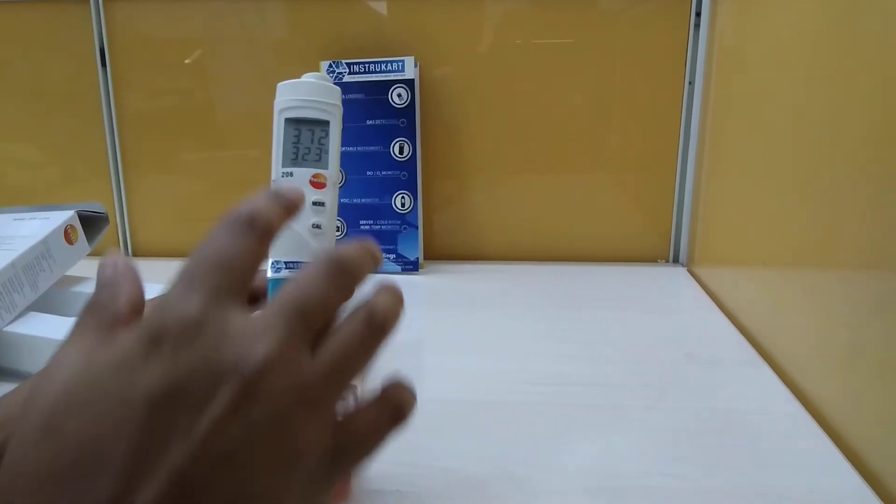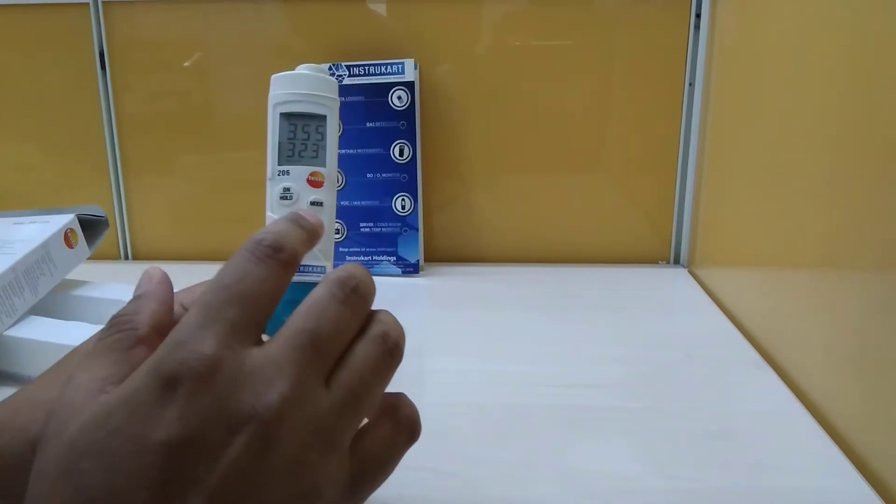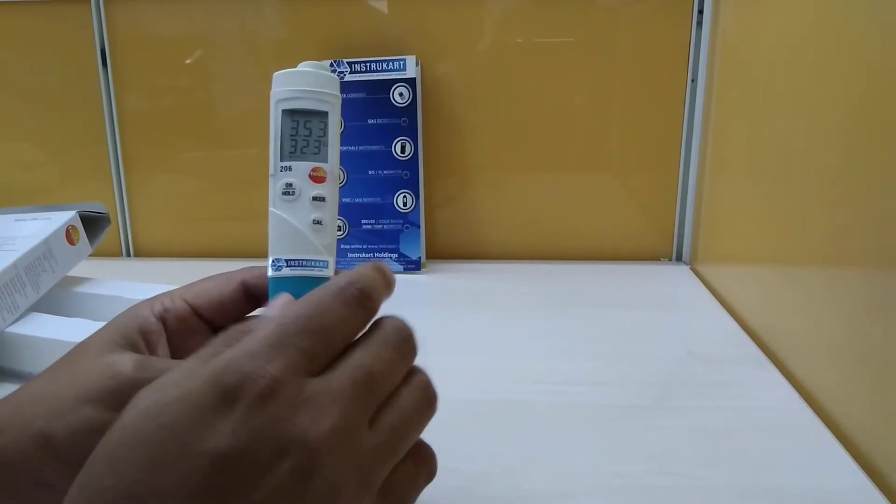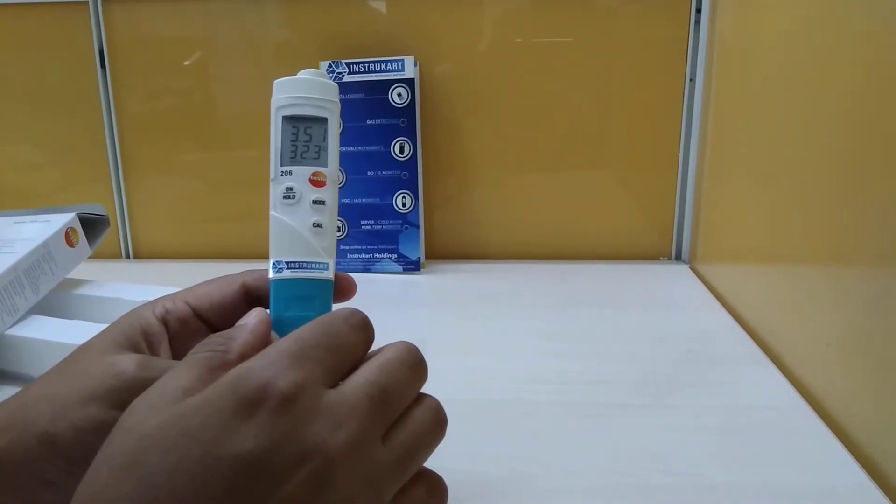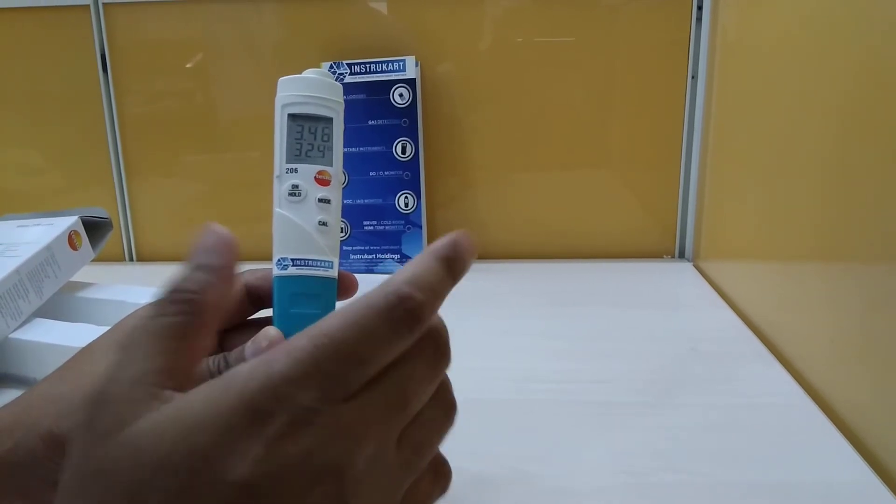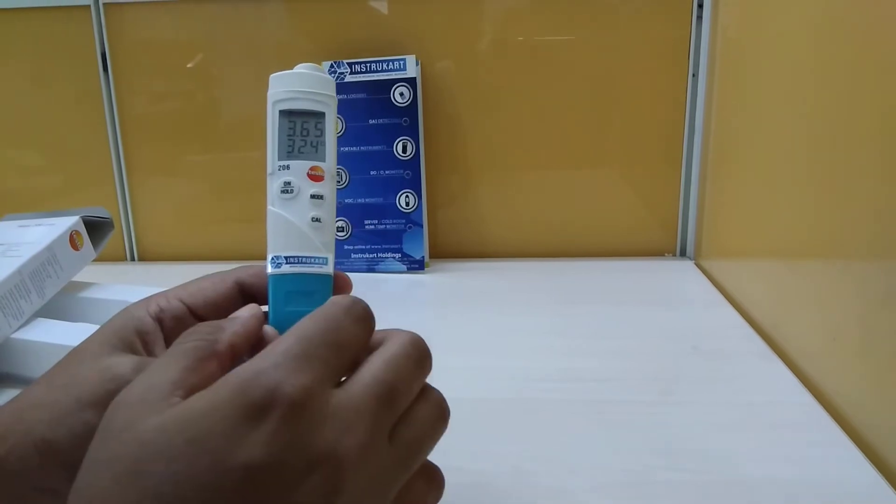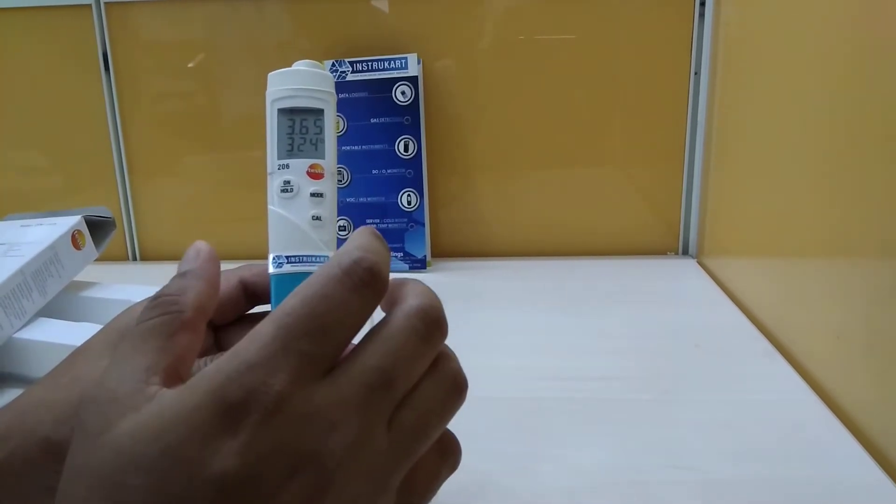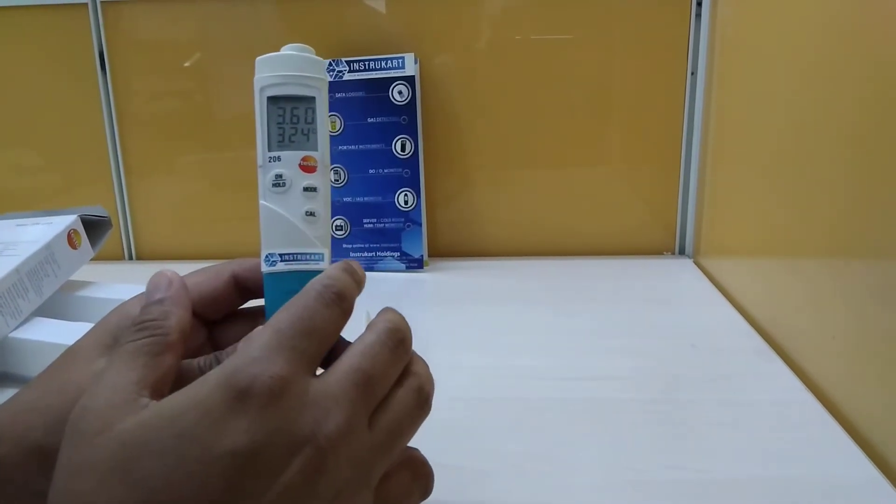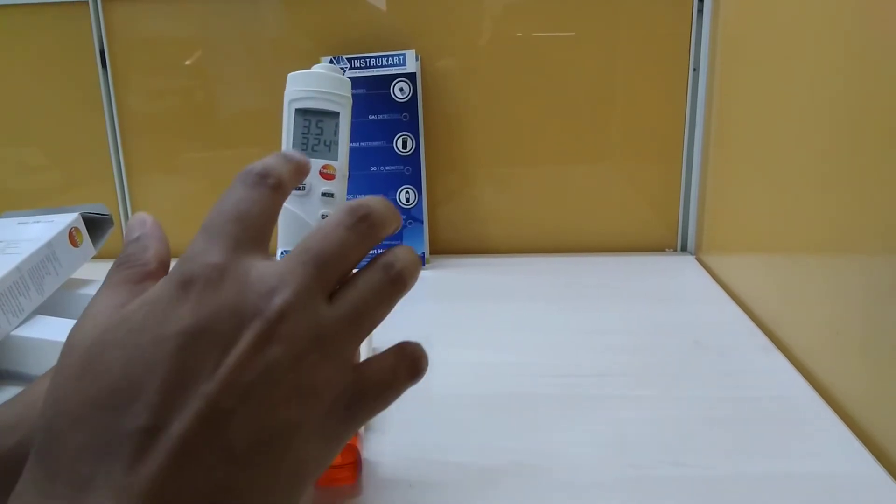The resolution of pH is 0.01 and temperature is 0.1 degrees Celsius. The accuracy for this pH meter is plus or minus 0.02 pH, which is great accuracy for this instrument. The display, as you can see, is LCD.